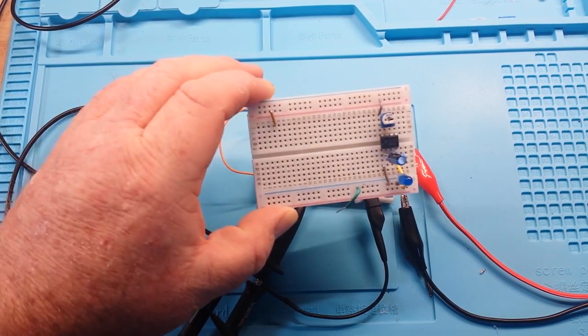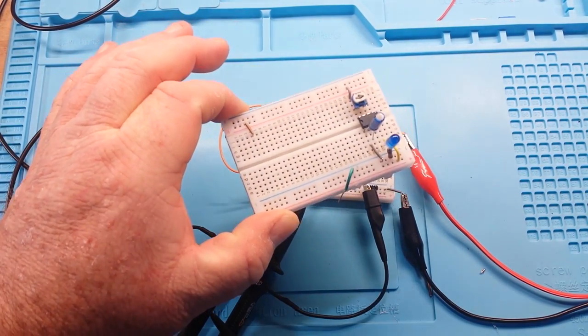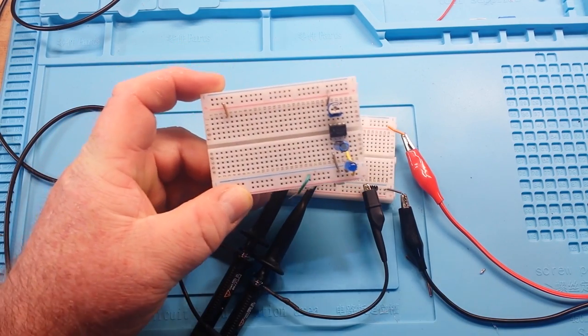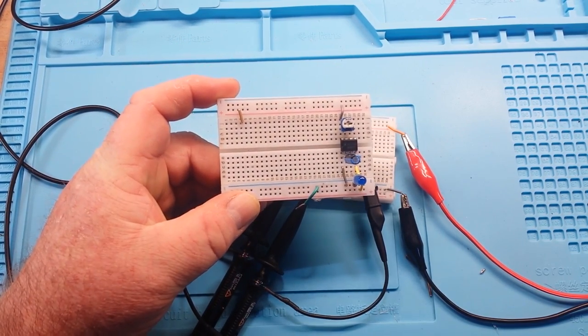Hey, what's happening guys? Here's our old friend the 555 timer. We're not talking about it today. I'm just holding it here to show you this is one example of an oscillator.